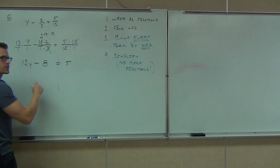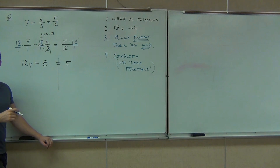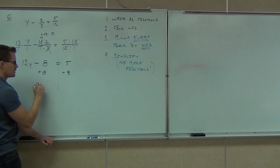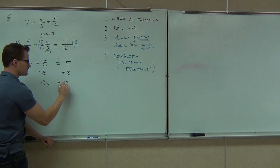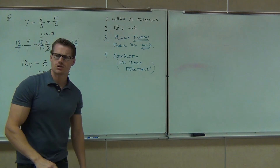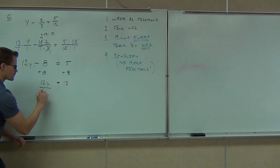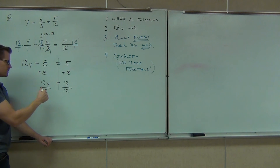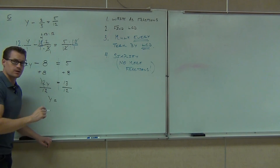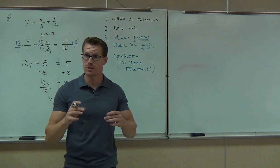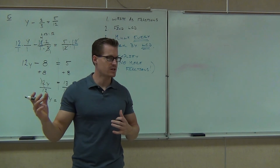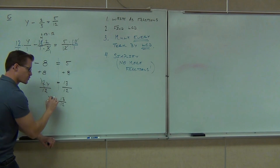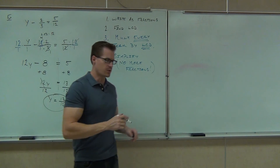This is much easier to solve because we've already done problems like this. We need to get rid of the minus 8, so we add 8 to both sides. We get 12y equals 13. Then we divide both sides by 12. We get y equals 13-twelfths. It's not inappropriate to write 1 and 1-twelfth, but 13-twelfths is fine as well.